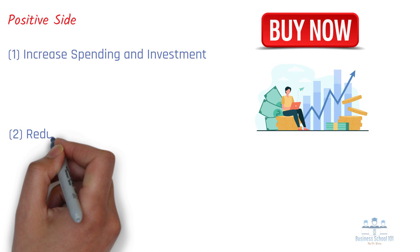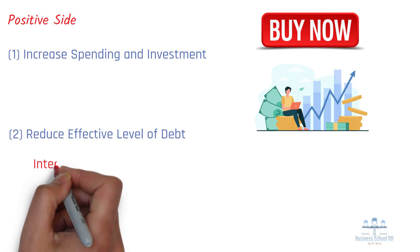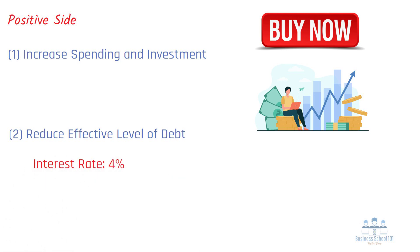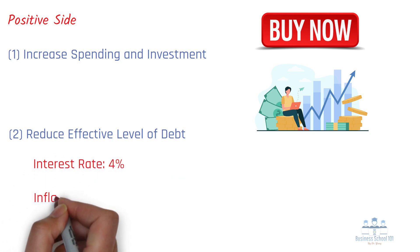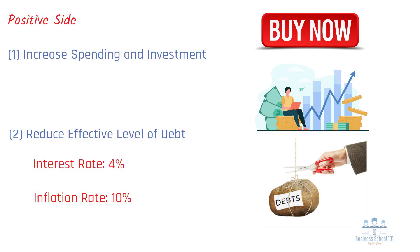Number 2, Reduce Effective Level of Debt. Whether it's a business, the government, or the consumer, those who have high levels of debt may benefit from having higher levels of inflation. For example, the borrower may have an interest rate of 4% on their debt. If inflation is at 10% and their income increases at a similar rate, it means the effective rate by which they are repaying declines.